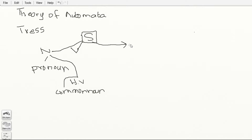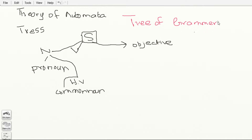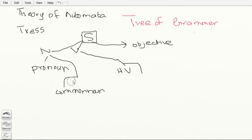So this is a tree of grammar. Our sentence can also have an object. The verb can also have your helping verb and other types of words. Let me just remove helping verb from here. So if we write a sentence: 'I am a boy'.